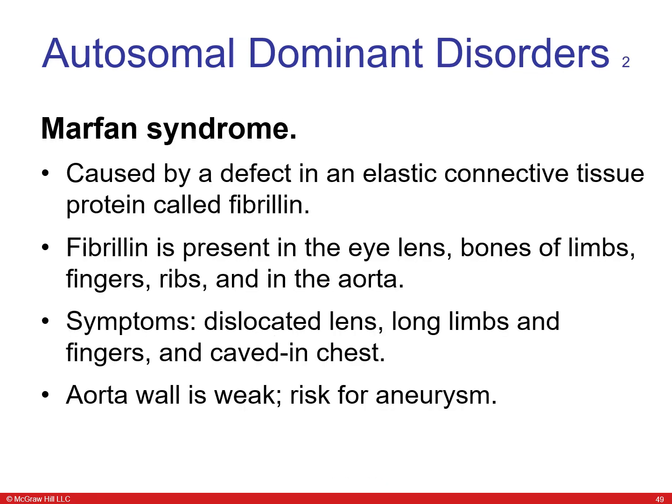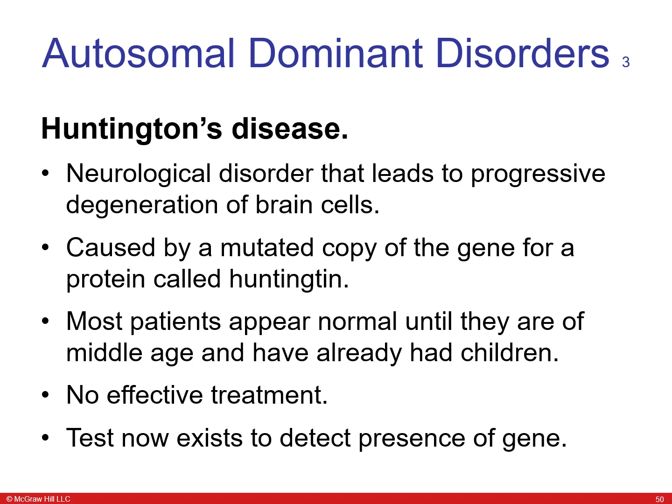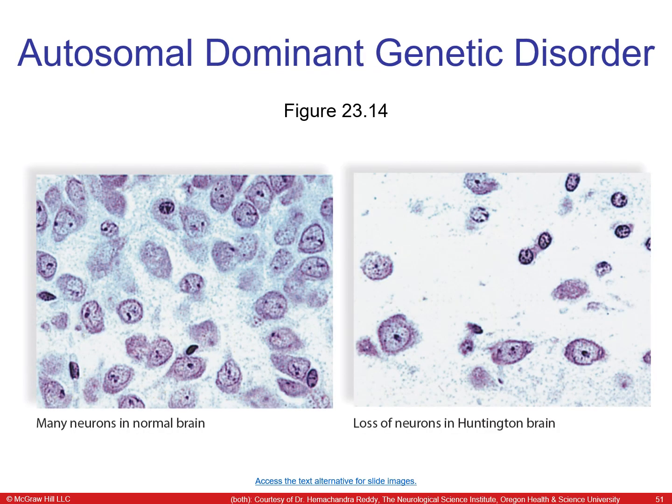Marfan syndrome is an autosomal dominant disease caused by a defect in the protein fibrillin, present in the eyes, bones, fingers, ribs, and aorta. If the aorta is weak, there is a risk of rupturing. Huntington's disease is another autosomal dominant disorder leading to progressive degeneration of brain cells, caused by a mutated copy of the Huntington gene. Most patients appear normal until middle age and already have children; there is no effective treatment, but a diagnostic test is now available.